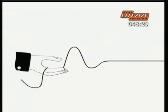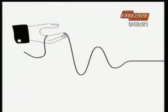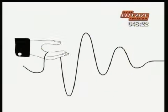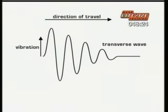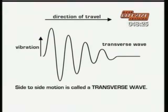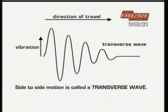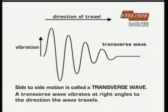You can set up a wave in a rope by moving one end from side to side. Side to side motion like this is called a transverse wave. The vibration is at right angles to the direction the wave travels.